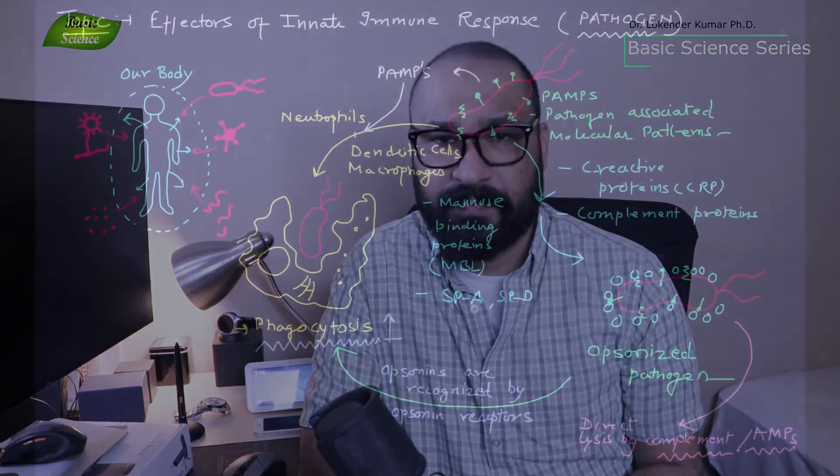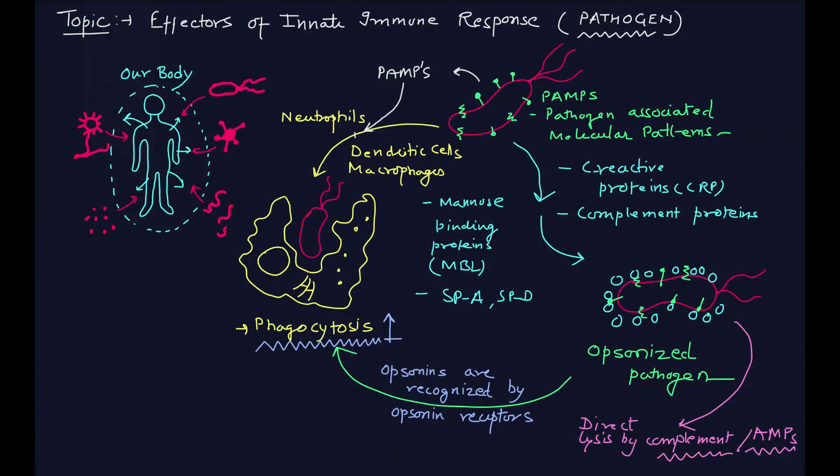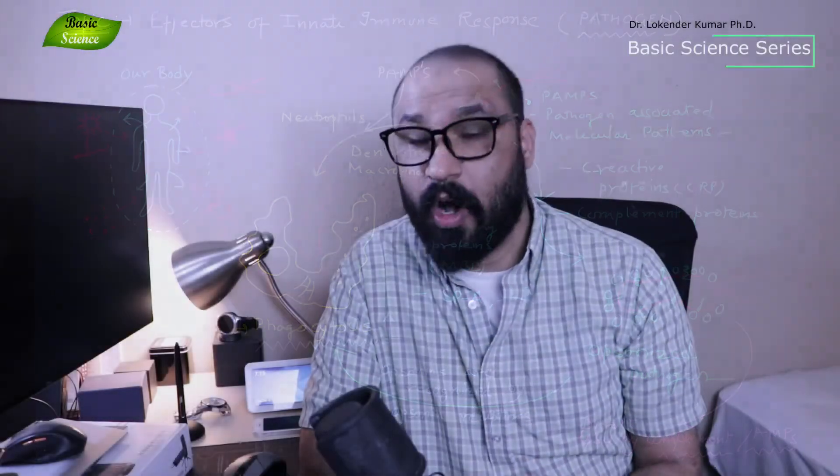In this video we will discuss the effectors of the innate immune system. We will discuss what is phagocytosis, what is opsonization, and the role of C-reactive proteins, mannose-binding proteins, as well as the complement proteins. I'll show how our body defends against pathogenic organisms.